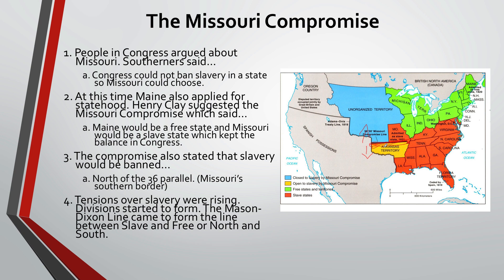But tensions over slavery are rising. Divisions form, and this line — the 36th parallel all the way through the Mason-Dixon line — basically cut the country in half between free and slave. These sectional differences grow and mount and are never really resolved until we fast forward to the Civil War.